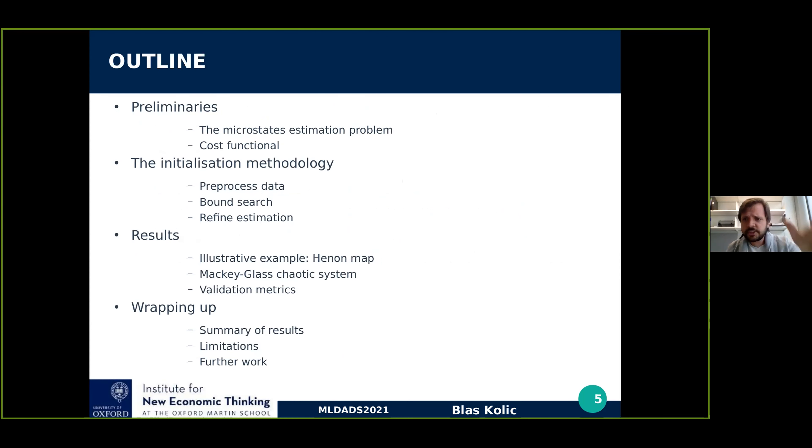This brings me to the outline. First, we're going to say what the microstate estimation problem is and how we tackle how good an estimate is using a cost function. Then I'm going to describe briefly my methodology, which is very simple. Then we're going to give some illustrative results and leave some time for a discussion.